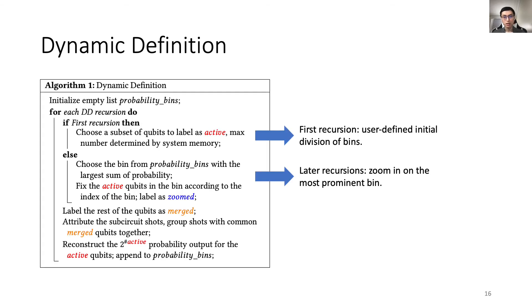This is the complete DD algorithm. During the first DD recursion, users can decide an initial division of bins. The max number of bins is determined by the system memory available. During the subsequent DD recursions, the algorithm automatically zooms in on the most prominent bins, while holding the other qubit states constant. Users can also arbitrarily choose which bin to zoom in, if, for some reason, the most prominent bins are not of interest.